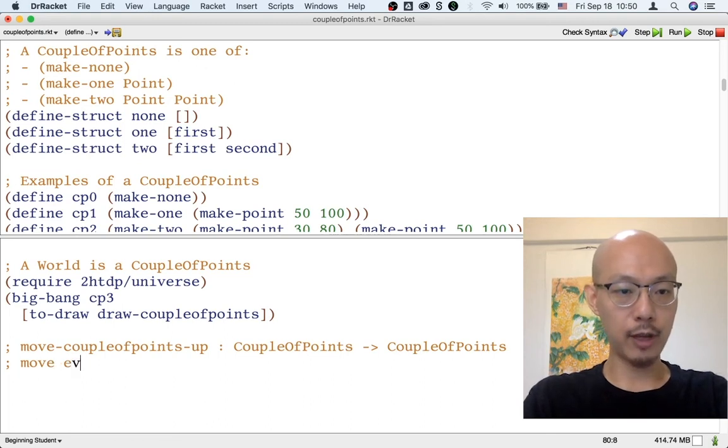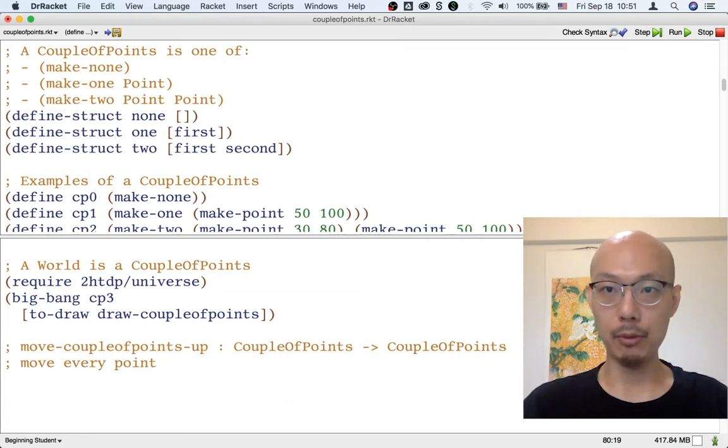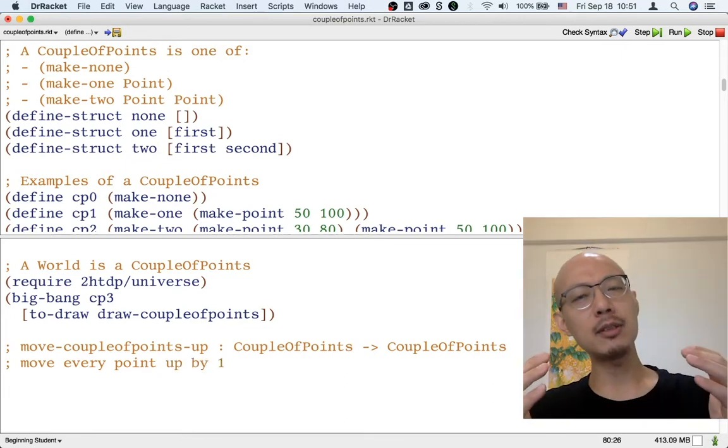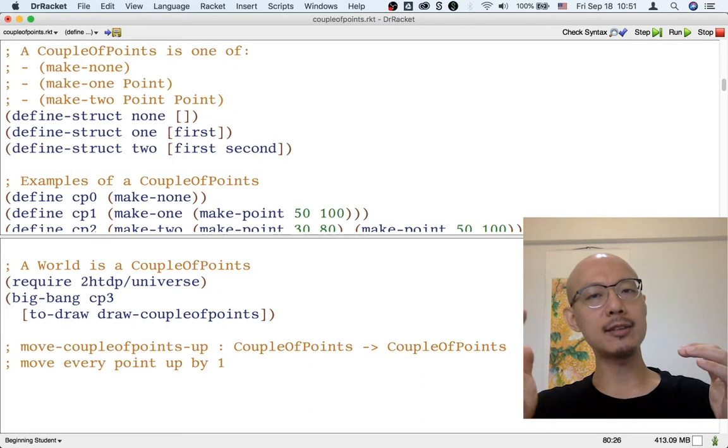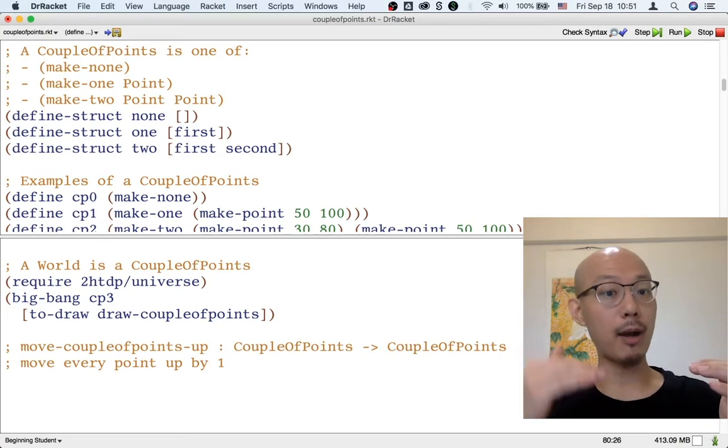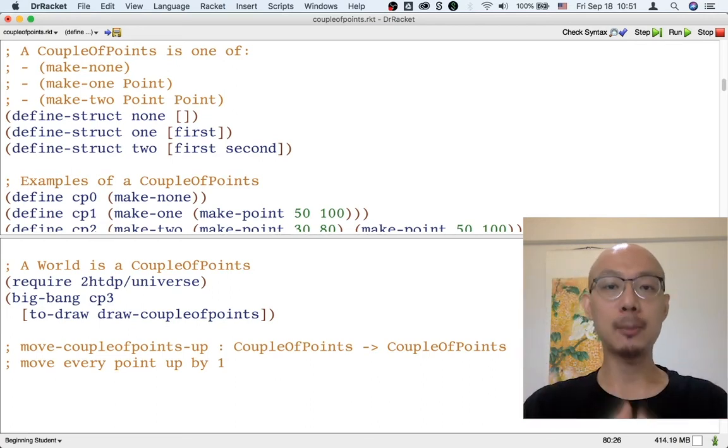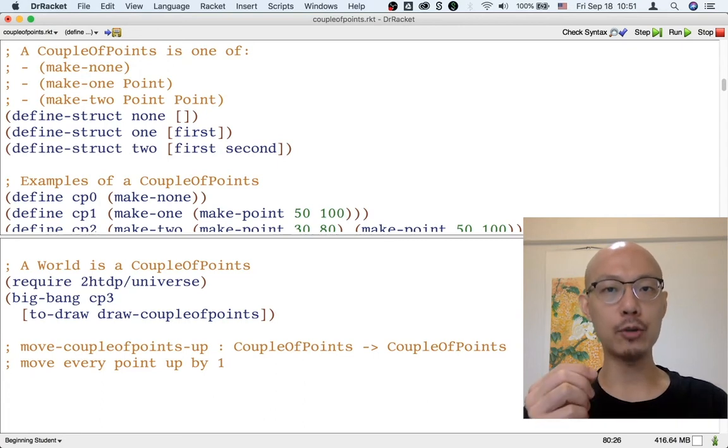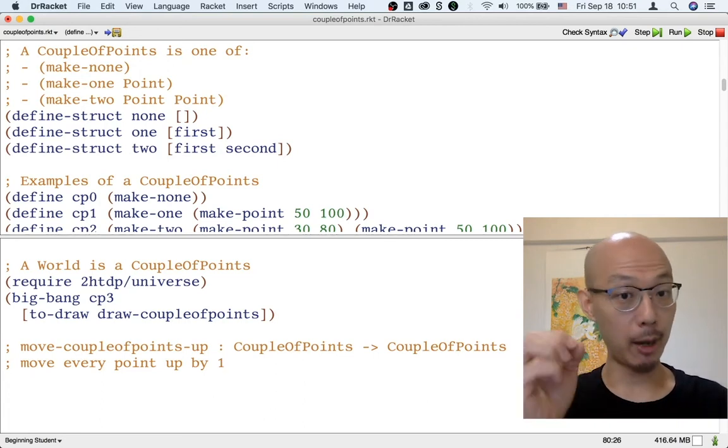And it's going to, let's say, move every point, because the couple of points might contain no point or one point or even two points. It's going to move every point up by one. In other words, if you remember the coordinate system where x goes from left to right, but y goes from top to bottom, we're going to be subtracting one from every y coordinate, so the point's going to go up.